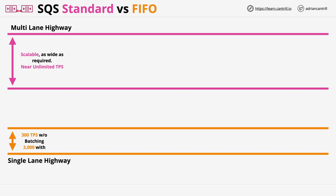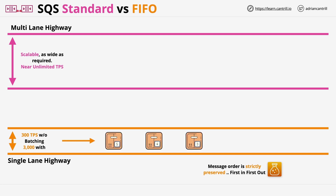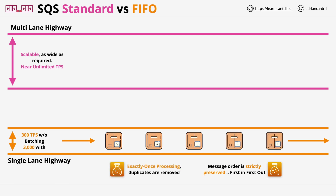FIFO queues, as the name suggests, guarantee order — they're first in, first out. So what you're trading is performance for preserved order. They also guarantee exactly-once processing, removing the chance of duplicate message delivery. Another important restriction is that FIFO queues must have a .fifo suffix in their name to be a valid FIFO queue. Remember that one, because it comes up in the exam many times.